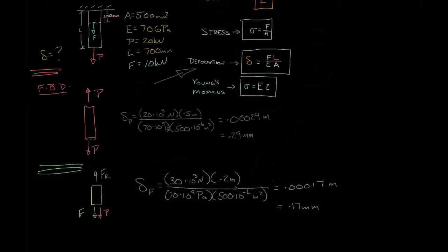Which tells us that the final total deformation is the deformation due to the force P plus the deformation due to basically force F and P, which is 0.29 millimeters plus 0.17 millimeters, which equals 0.46 millimeters.